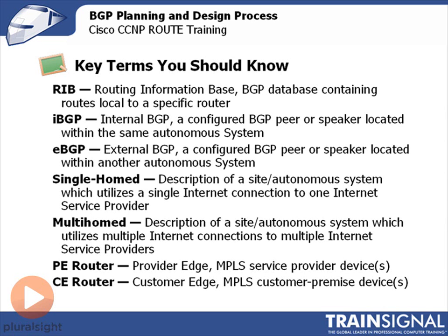IBGP, or Internal BGP, is a configured BGP peer or speaker located within the same autonomous system. EBGP, or External BGP, is a configured BGP peer or speaker located within another or different autonomous system. Understand the difference between IBGP and EBGP. IBGP has an Administrative Distance of 200, and EBGP has an Administrative Distance of 20.